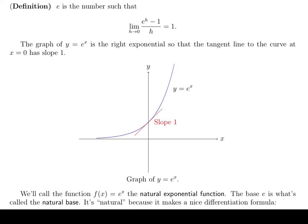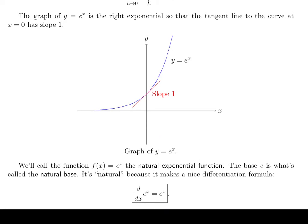So we're going to say that this function f of x equals e to the x is the natural exponential function. So the base e, which again, e is just a number, it's about 2.7, that's called the natural base. And it's natural because it makes a nice differentiation formula. So when you use e as the base of your exponential, then the derivative of e to the x will just be e to the x. So you may have actually encountered e somewhere in algebra or pre-calculus. And at the time, they just tell you, well, this is a natural base, but they're not really able to tell you why.